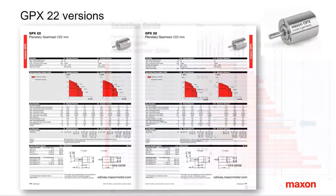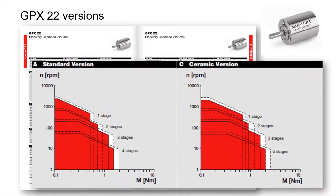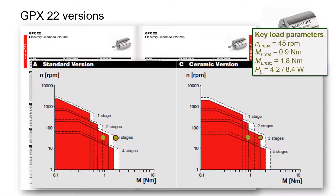Let's investigate the datasheet of the GPX 22 in more detail. First, note that there are different versions: standard, ceramic, low noise, and more. Here we will consider the standard and ceramic versions only. Each gearhead comes with up to four stages, each with different possible reduction ratios. In the diagrams we observe that the torque capabilities increase with increasing number of stages, while the output speed and transmitted power decrease. Our application requires 0.9 Nm continuous and 1.8 Nm peak torque at a speed of 45 RPM. The peak load is outside the operating range of the standard version A; the stronger ceramic versions with three stages, however, should be a possible solution.